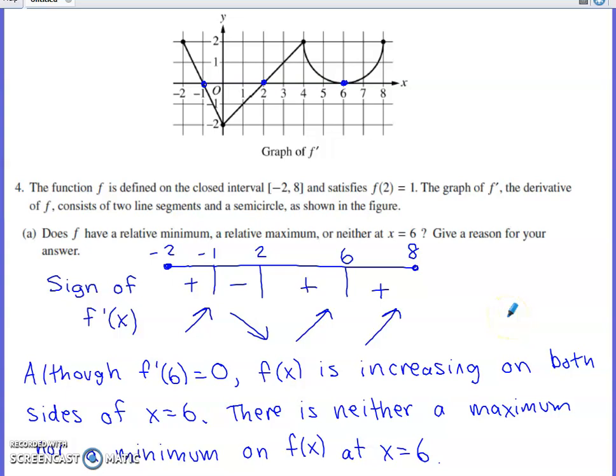So in this video, we'll discuss problem number four from the 2023 AP Calc AB and BC exams. This problem involves a graph of a derivative, and most years the free response set does have a problem kind of like this. So in this particular problem, we have a graph of f prime.